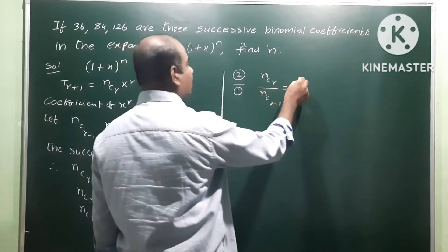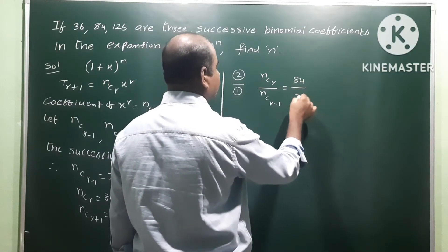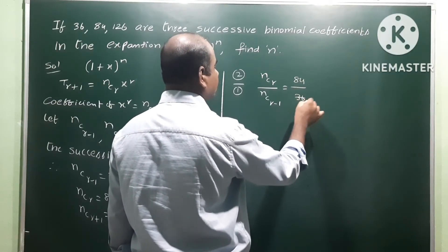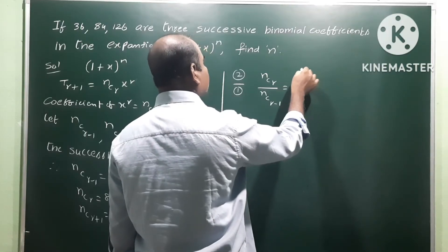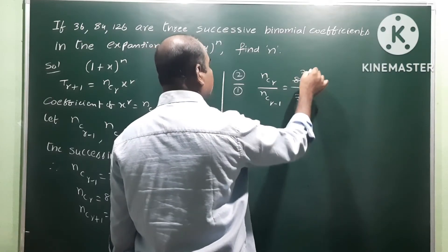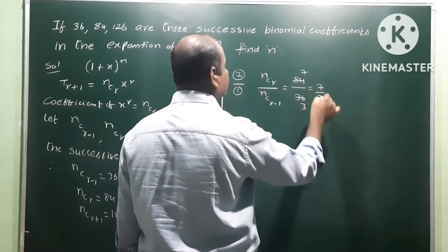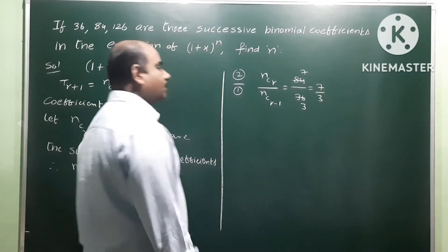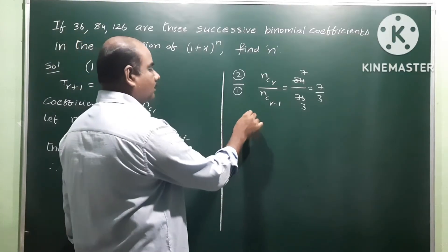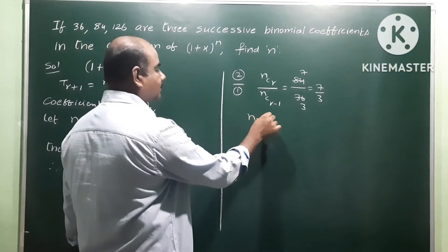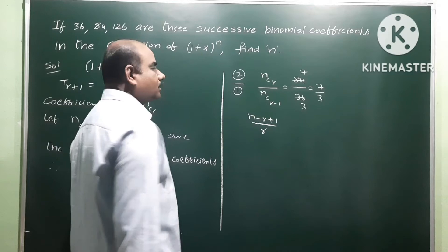Using nCr / nC(r-1) = 84 / 36 = 7/3. The formula for nCr / nC(r-1) is (n - r + 1) / r. So (n - r + 1) / r = 7/3.